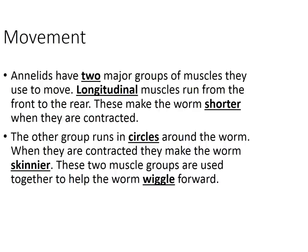For movement, annelids have two groups of muscles. Longitudinal muscles run from front to back and help them get shorter when contracted. Circular muscles go around the worm and make it skinnier when contracted. The alternating contraction and relaxation of these two muscle groups working together helps the annelid move and travel.